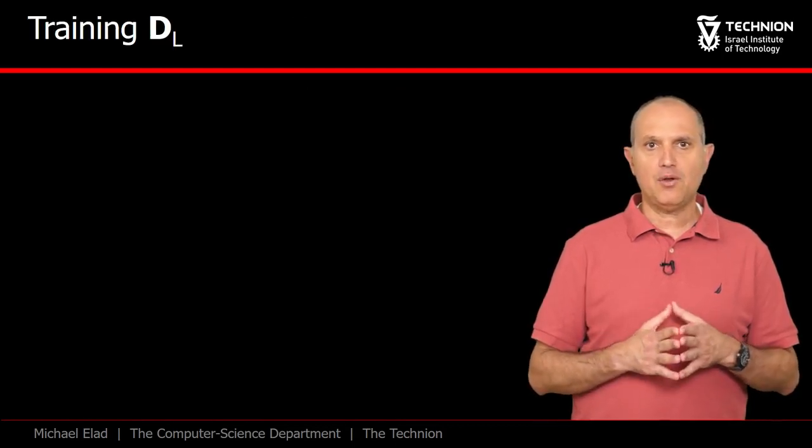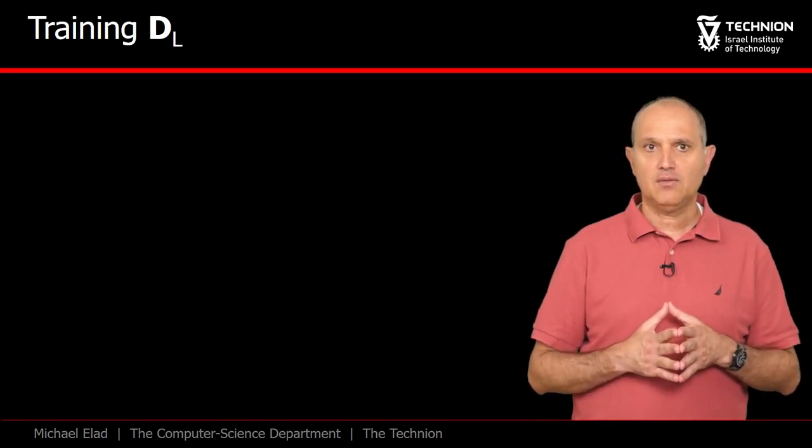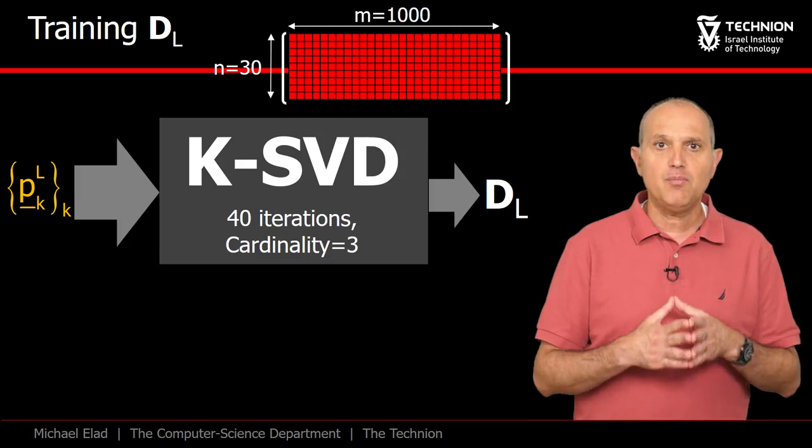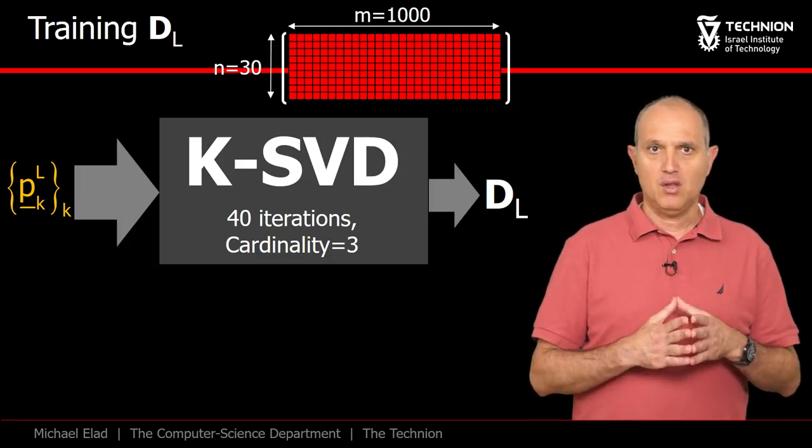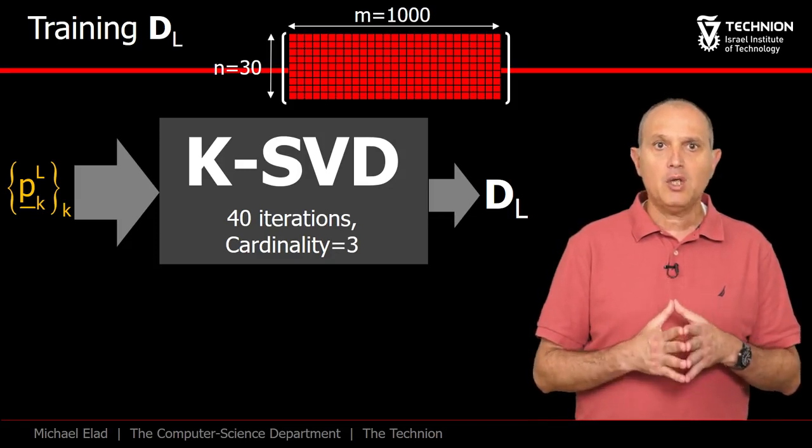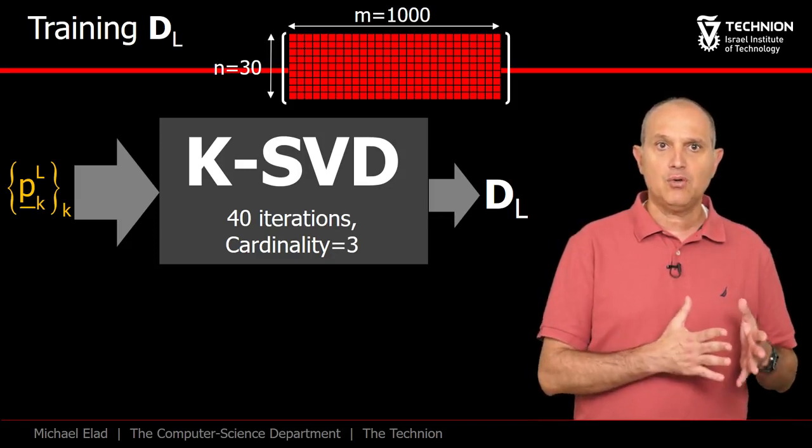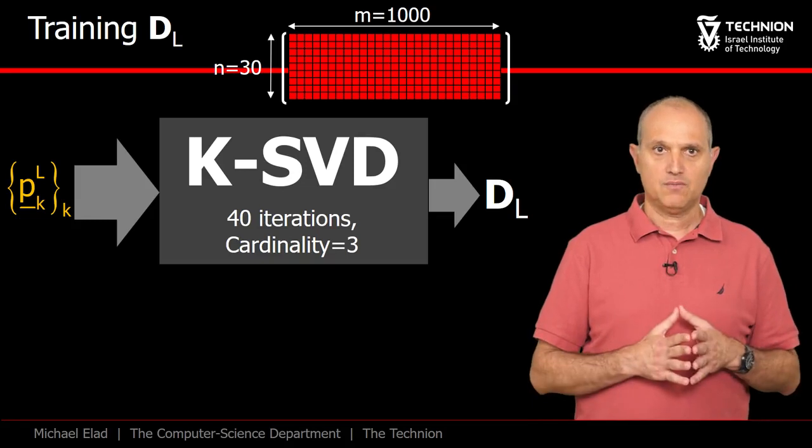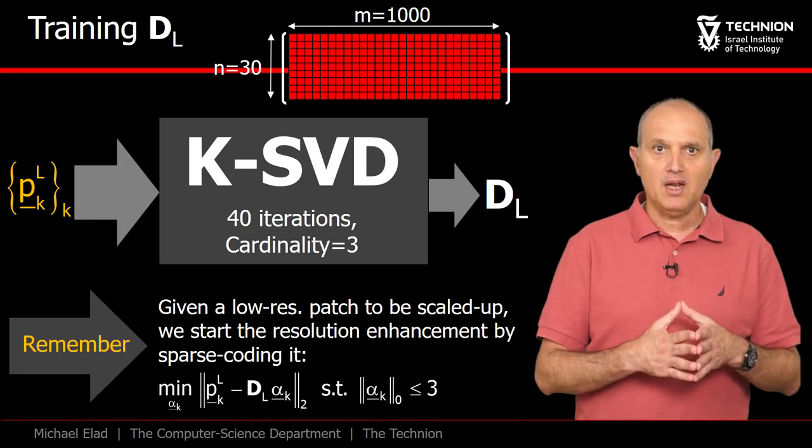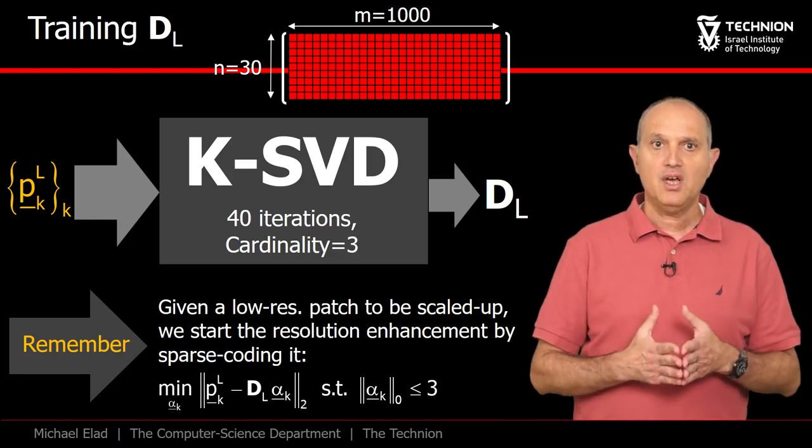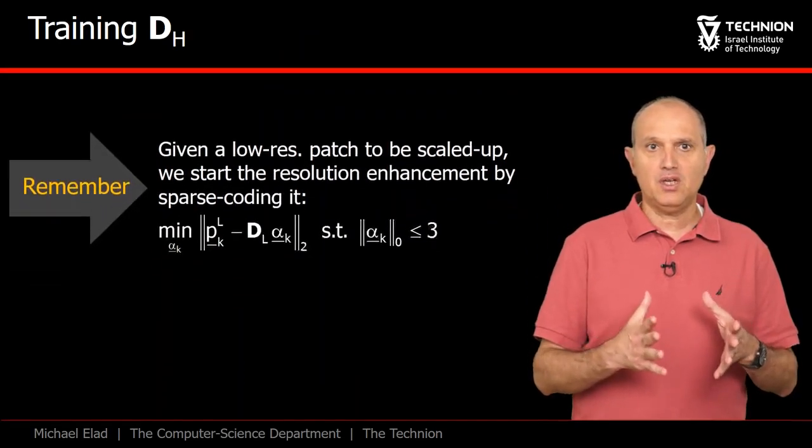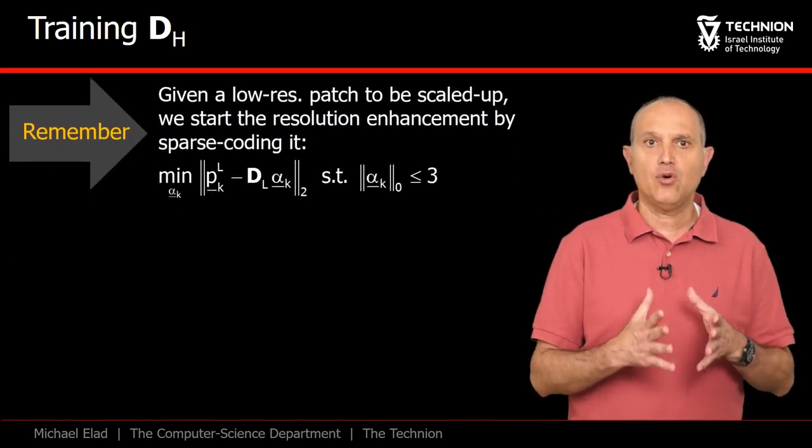In the proposed algorithm, the training process itself starts with DL. We simply use the KSVD to train a dictionary of size 30 by 1000. By the way, here and everywhere in this work, the parameters we report were obtained by empirical testing and optimization of the overall process. Given this dictionary, every low resolution feature vector from the image YL undergoes a sparse coding stage, and we get the sparse representation alpha k.